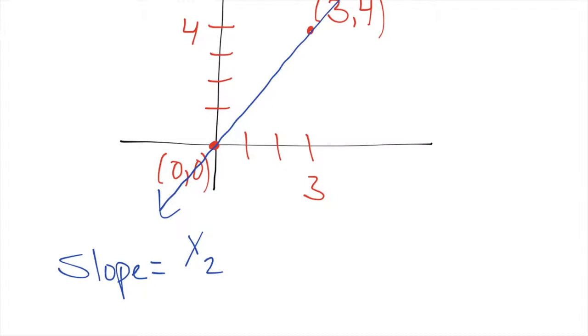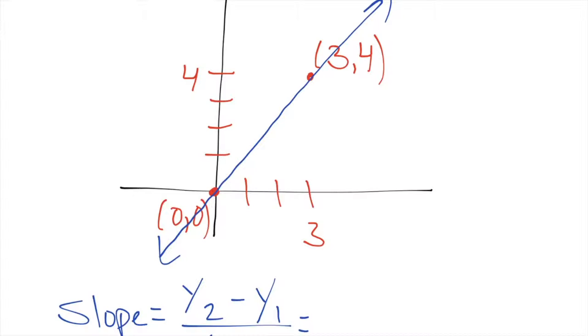y₂ minus y₁ over x₂ minus x₁. Just starting off, let's go ahead, it doesn't matter which one is x₁y₁ or x₂y₂, that's not important as long as you stay consistent. So I'm going to write the points here.